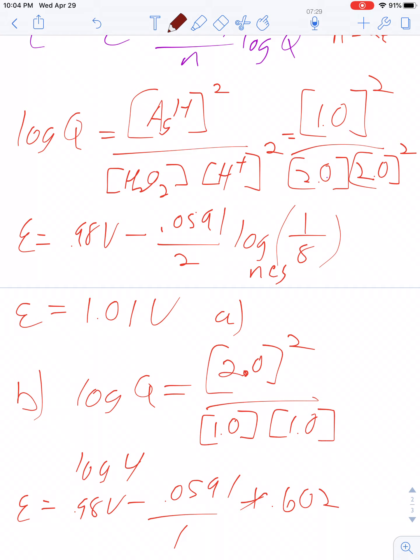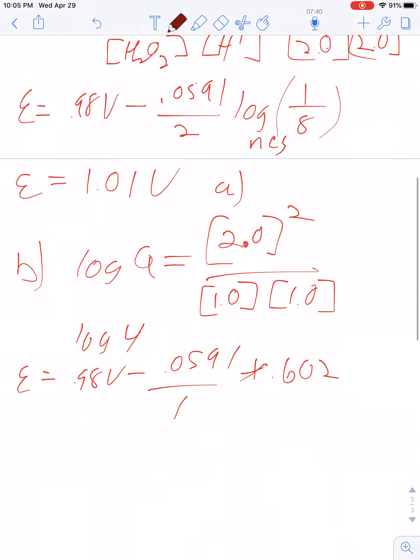So people sometimes think by increasing the concentration, you always increase the potential. That's not the case. So we increased the concentration of the silver ions, and it actually reduced our potential to 0.962 volts.